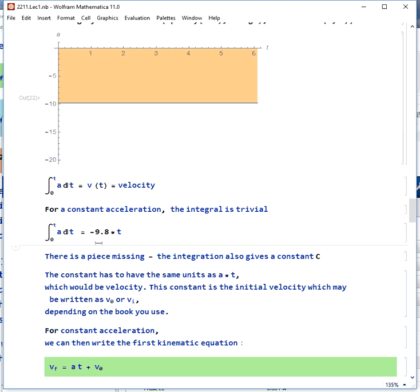Since we have constant acceleration, this is a very simple integral. We get just negative 9.8 times t. However, there's a piece missing. You know that whenever you do an integral, a definite integral, you should end up with an additive constant. This has to have the same units as a times t, and those units are velocity. So this constant is actually the initial velocity.